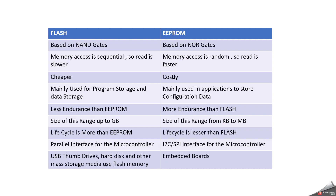In summary from the comparison table: flash is based on NAND gates, EEPROM on NOR gates. Flash memory access is sequential so reads are slower, while EEPROM memory access is random so reads are faster. Flash is cheaper but EEPROM is costly. Flash is mainly used for program storage and data storage, while EEPROM is mainly used to store configuration data. From an endurance standpoint, flash has less endurance than EEPROM. Flash sizes are in the GB range while EEPROM is KB to MB. Flash uses a parallel interface for microcontrollers while EEPROM uses SPI or I2C. Examples of flash include USB thumb drives and hard disks; EEPROM is mainly used in embedded boards.